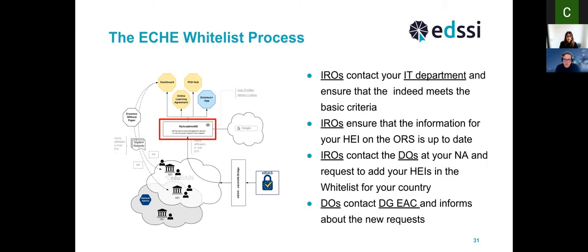Someone is asking to speak a little more slowly — apologies, that's a Greek way of speaking. So, what is the process for the whitelist? You, as international relations officers, need to contact your IT departments first and ensure that your institution meets the basic criteria. If it does, make sure the information of your institution on the ORS system is up to date — this is very important because it is our source of information for contacting you when you are on the whitelist.